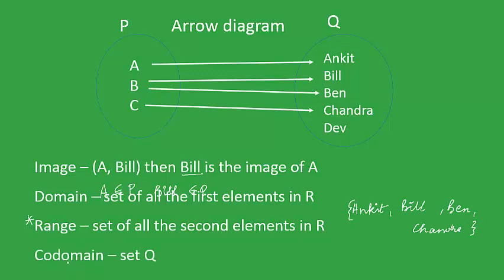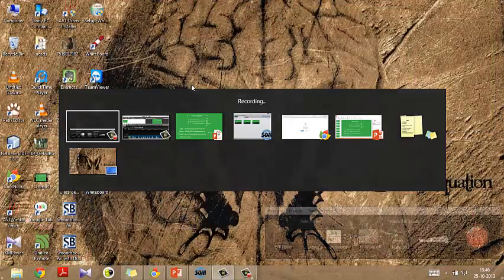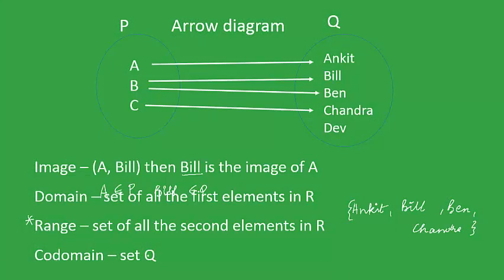The next is co-domain, which consists of all the elements of the second set, that is the set Q. Please note the difference between range and co-domain: the co-domain is the set Q itself, and it will contain all the elements of set Q — that is, Ankit, Bill, Ben, Chandra, and Dev as well.